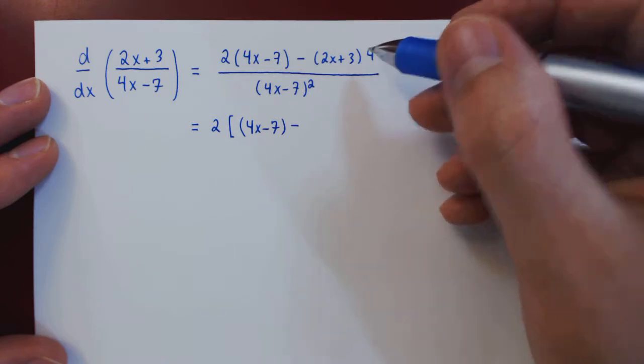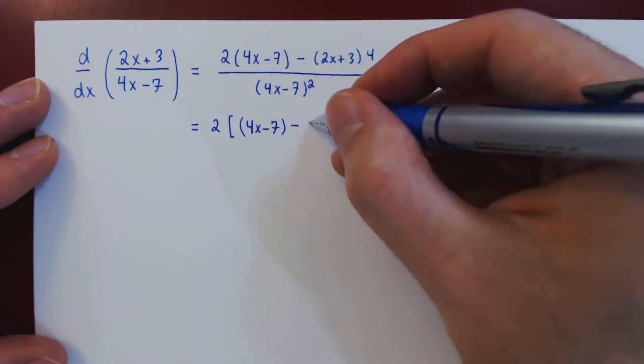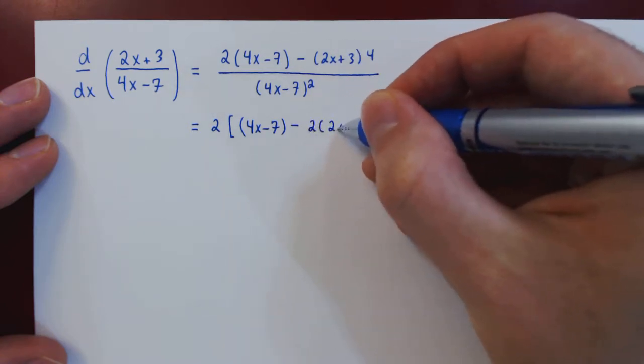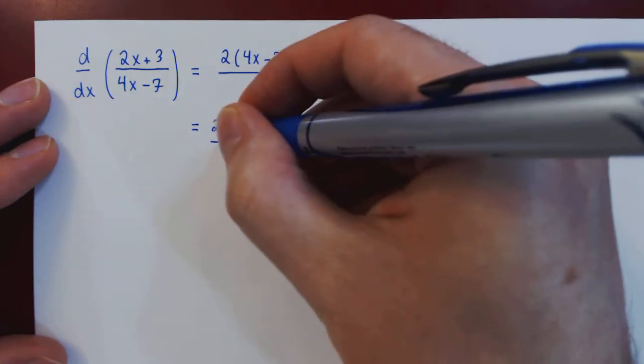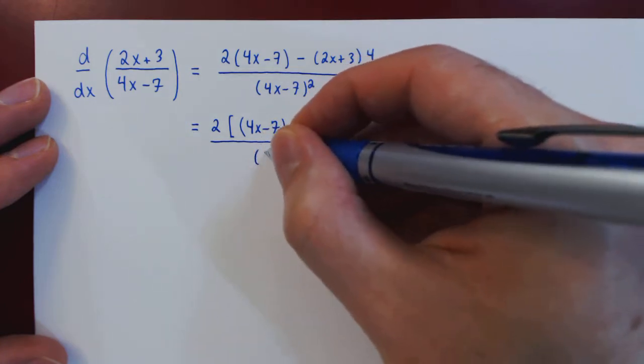Take away 2 from 4, that leaves you with a 2, so 2 times 2x plus 3. And of course over 4x minus 7 squared.